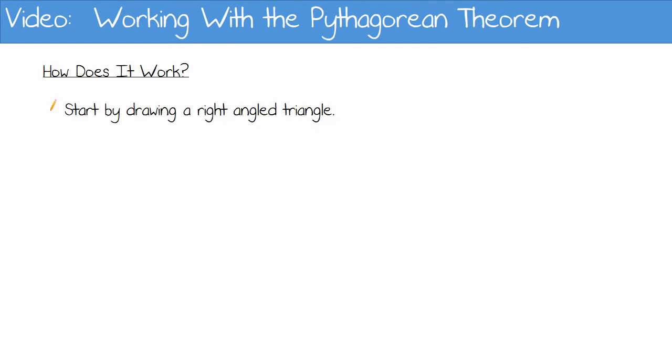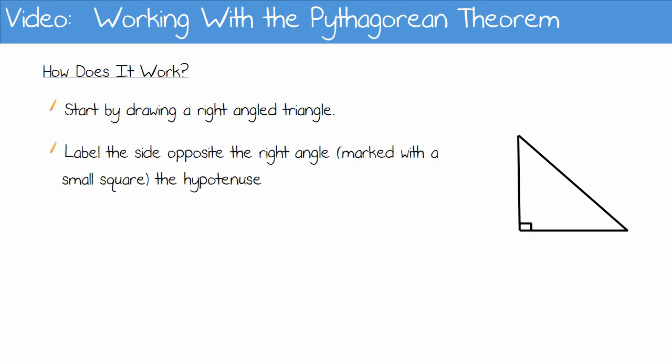How does it work? Let's take a look at an investigation. Start by drawing a right-angled triangle. Label the side opposite the right-angle that is marked with a small square, the hypotenuse.